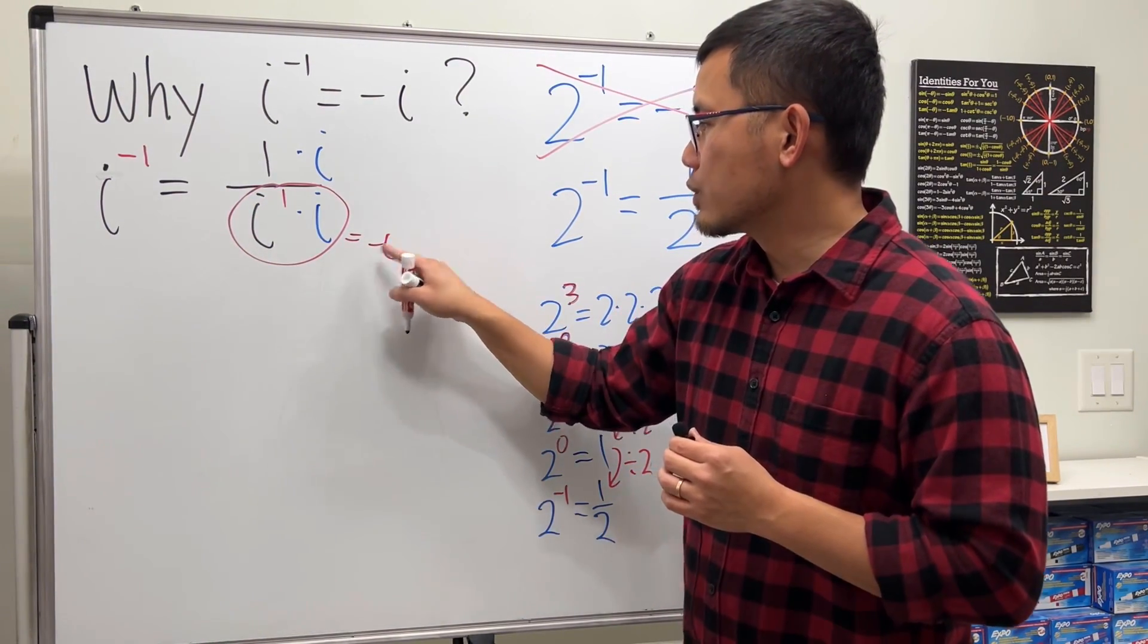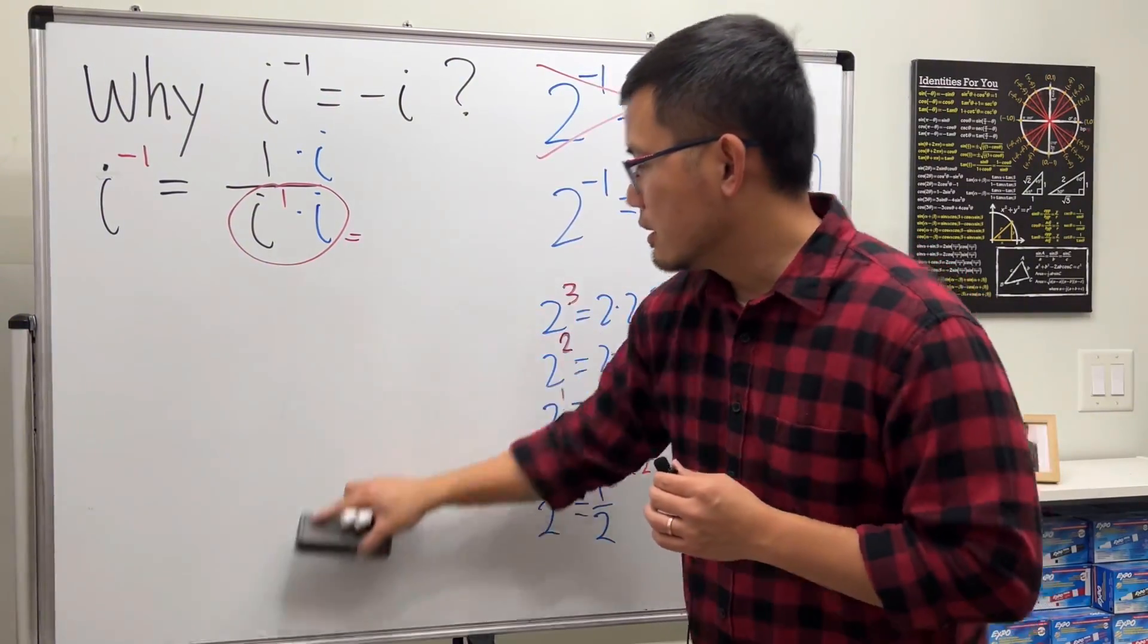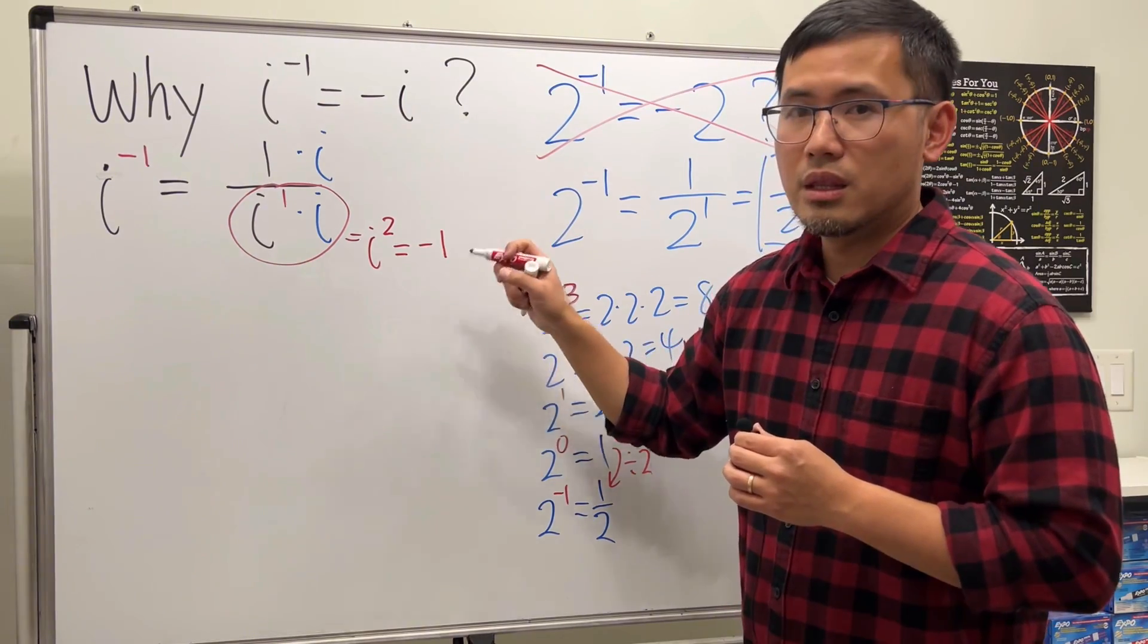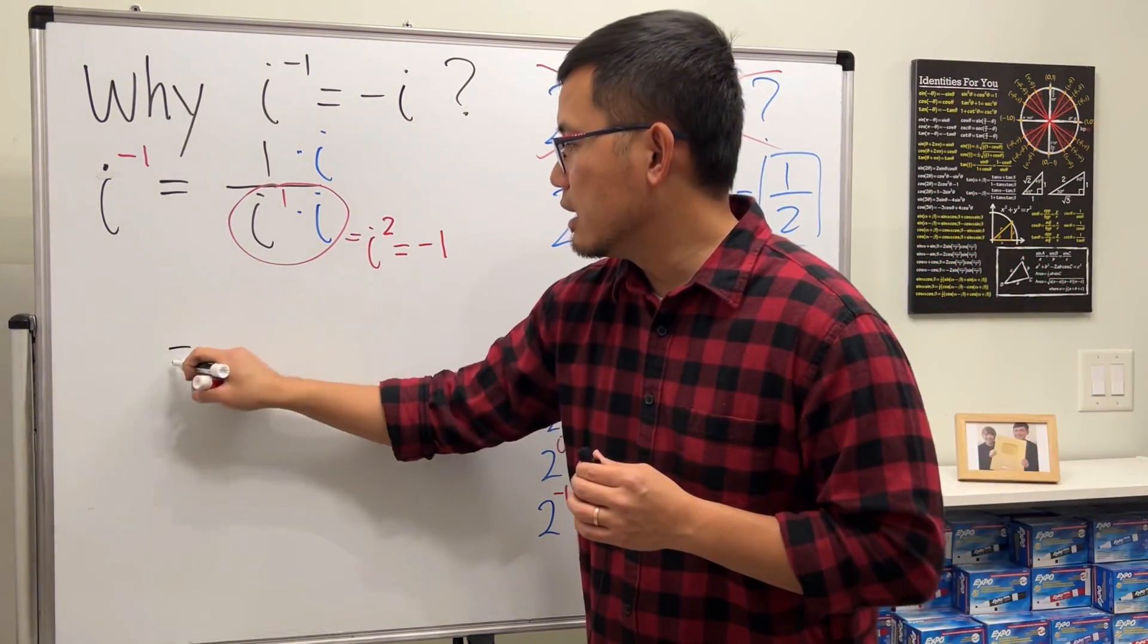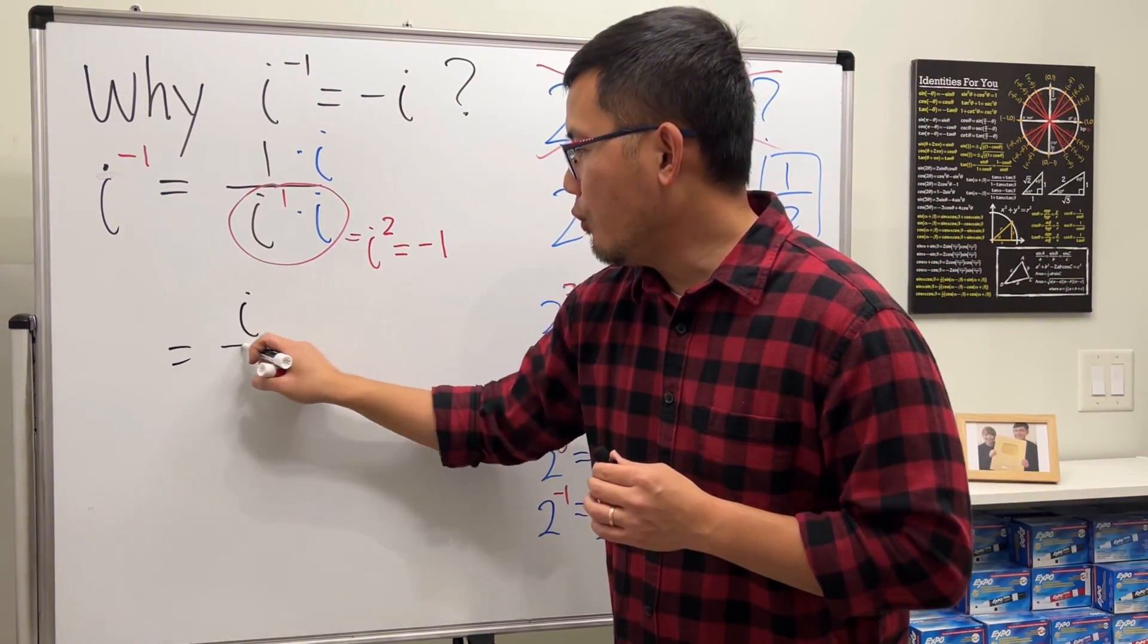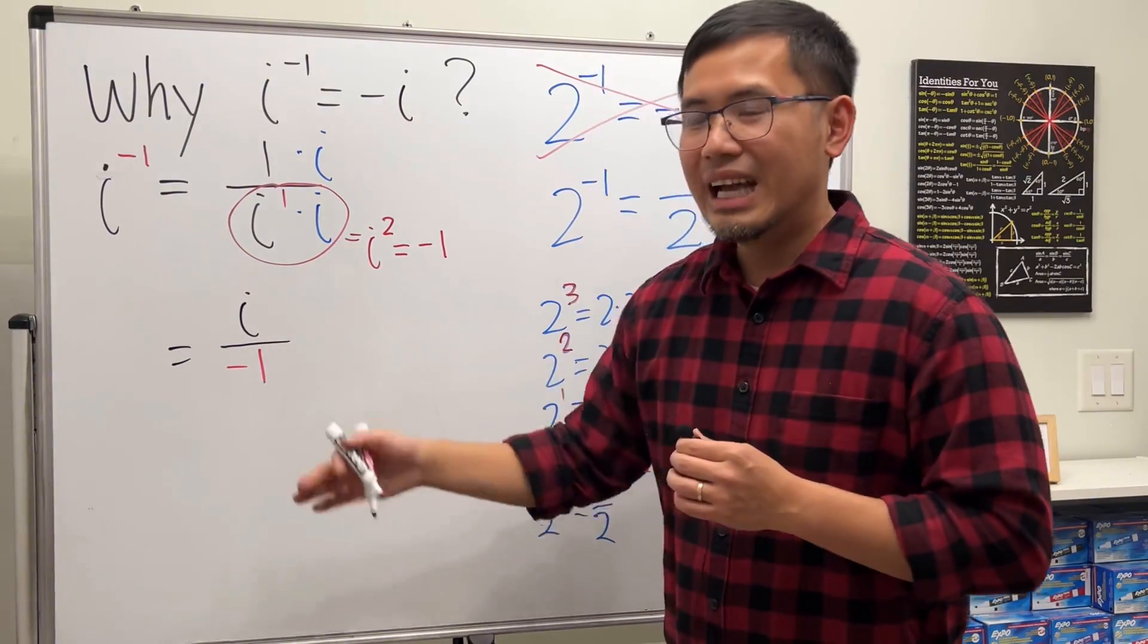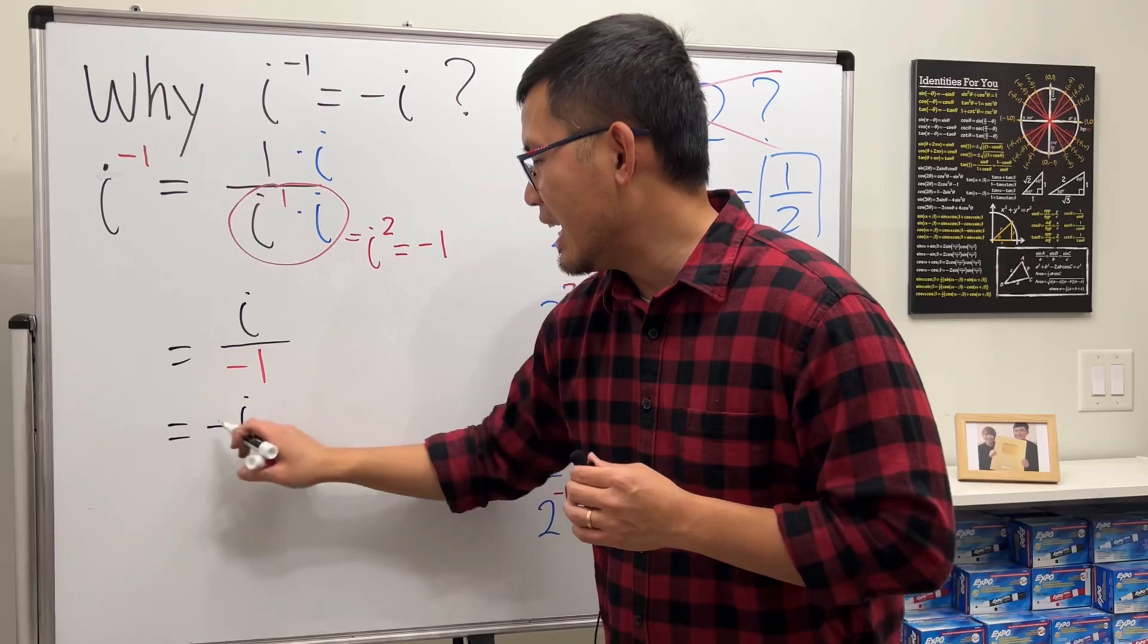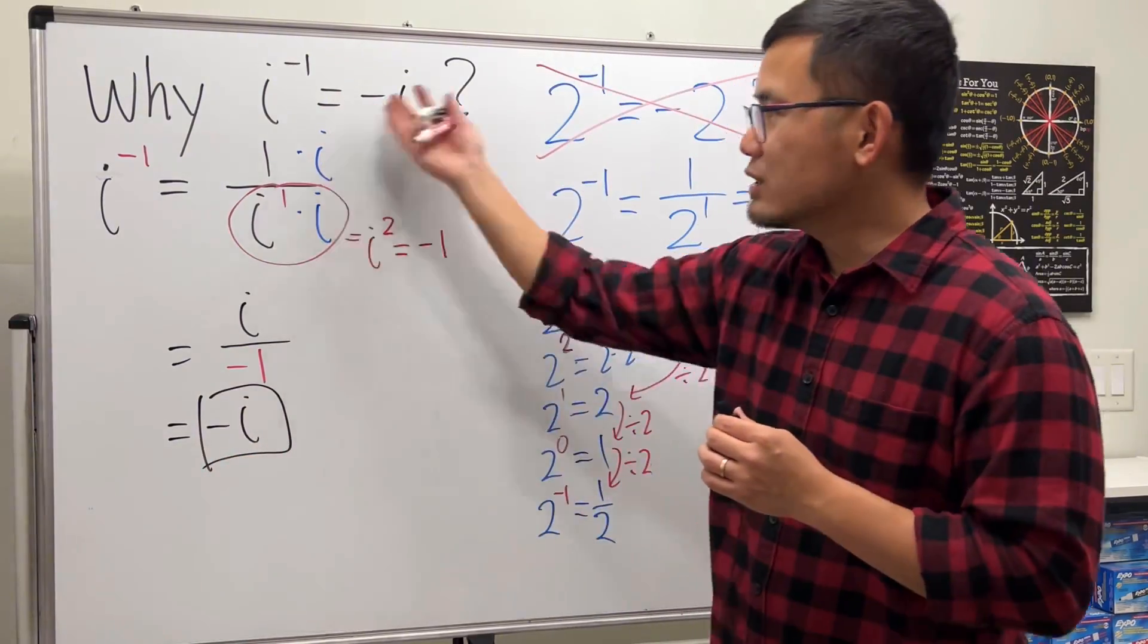Which is just equal to negative 1. So we are looking at i on the top over negative 1, and of course i divided by negative 1, you get negative i. So that's why this is true.